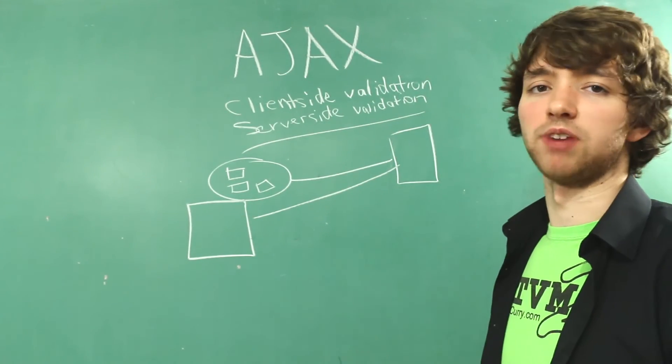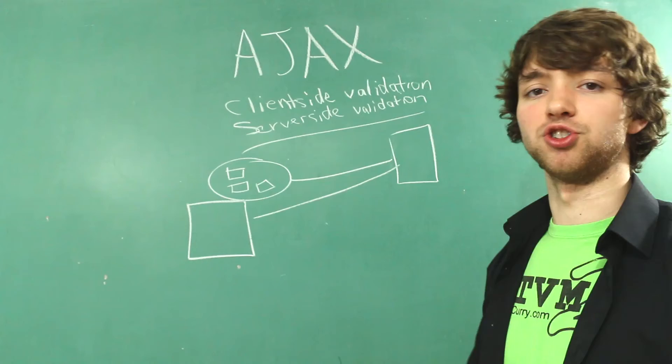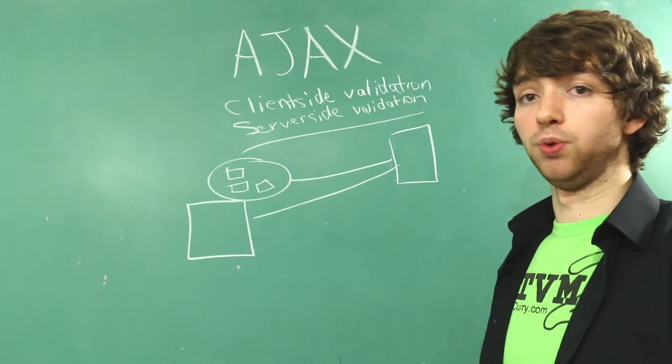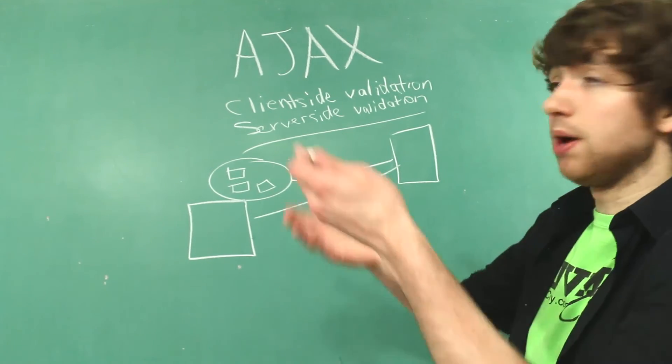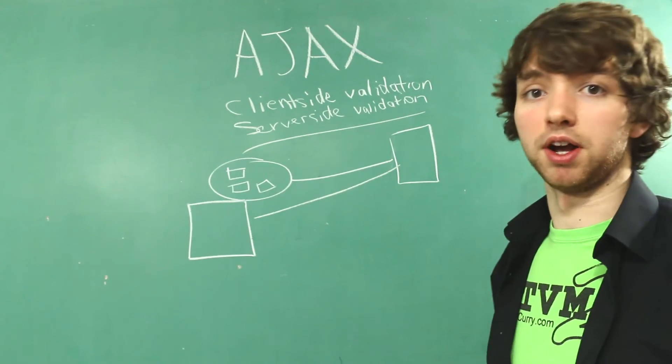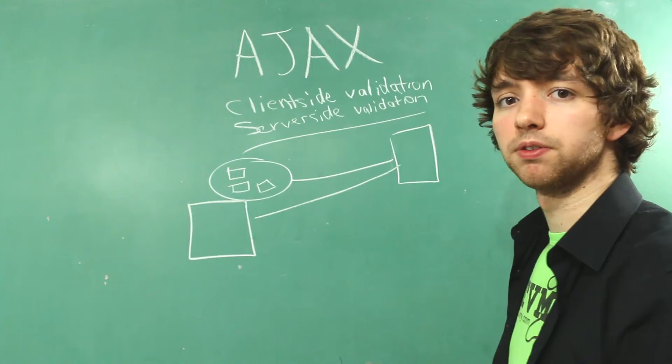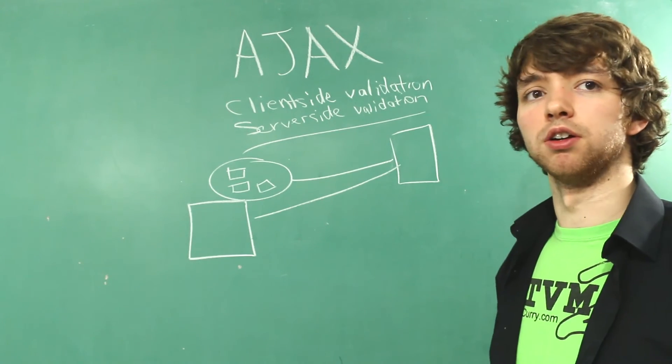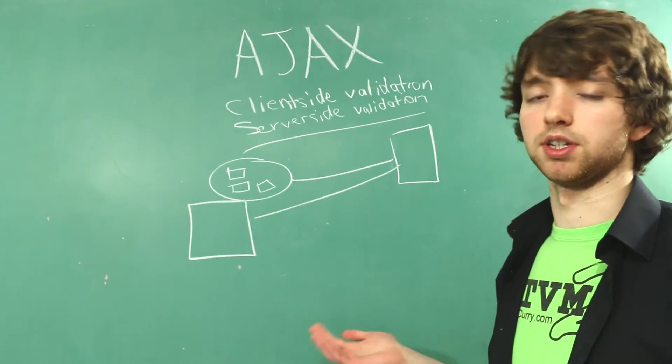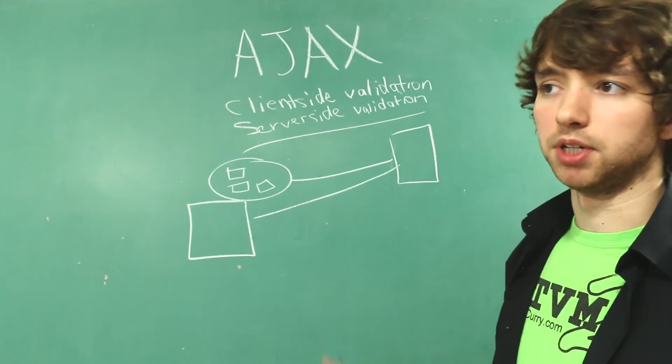AJAX isn't just good for form validation. It can also be used to check for new data. For example, in an email program, the website might use an AJAX request every two minutes to check if there's any new emails. That might be a little easier than having an open, persistent connection. But it might not be. It just depends.